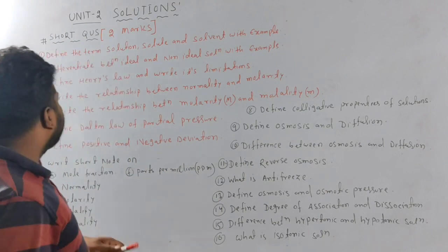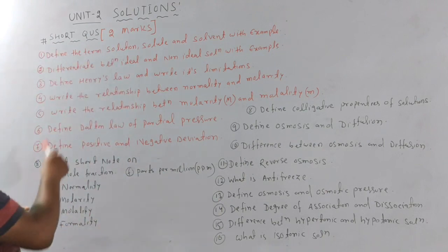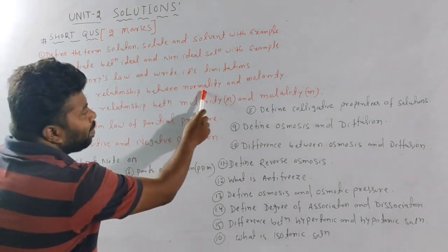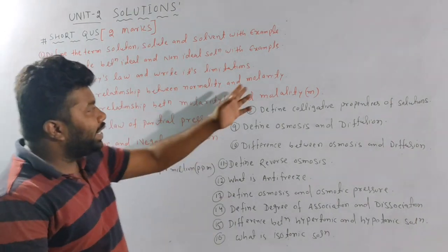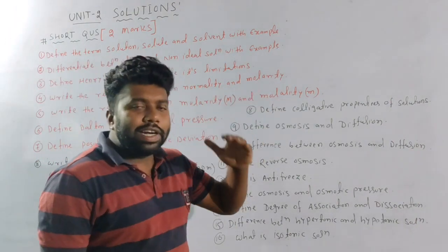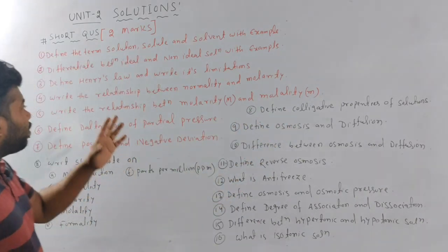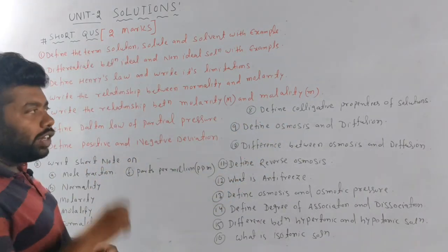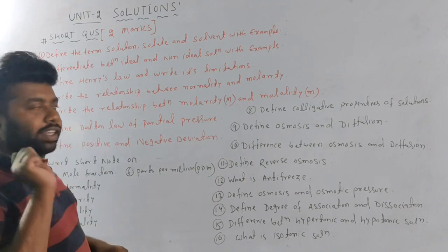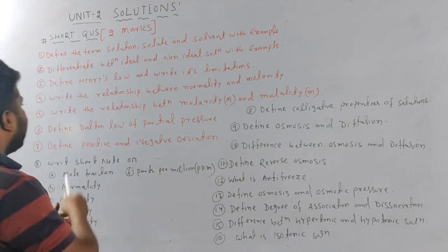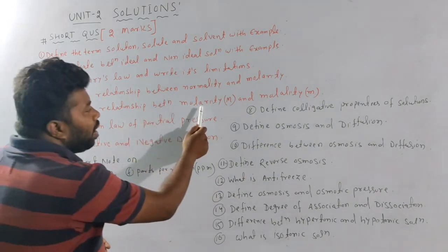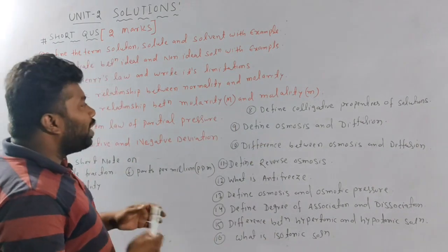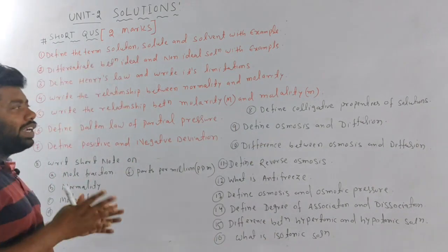Fourth question: write the relationship between normality and molality. For normality and molality, you will create a relationship between molality and normality.